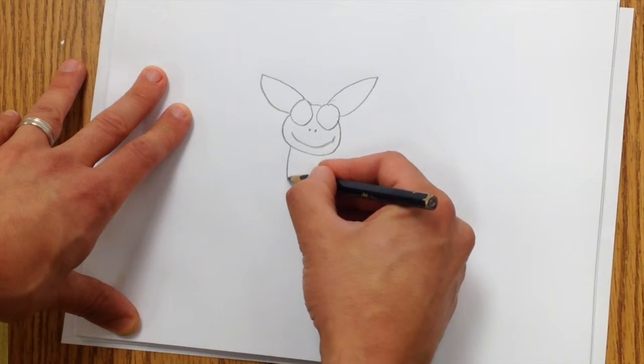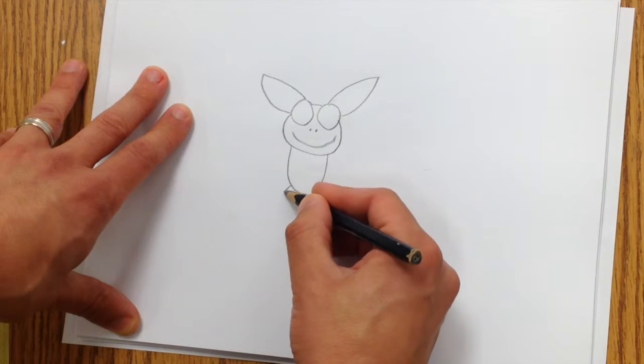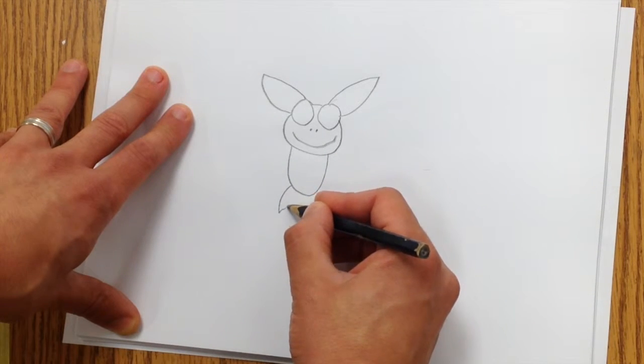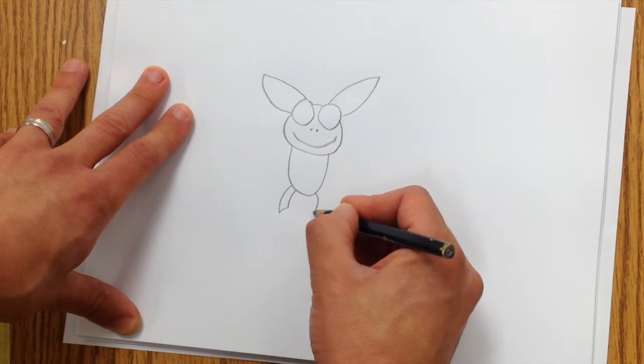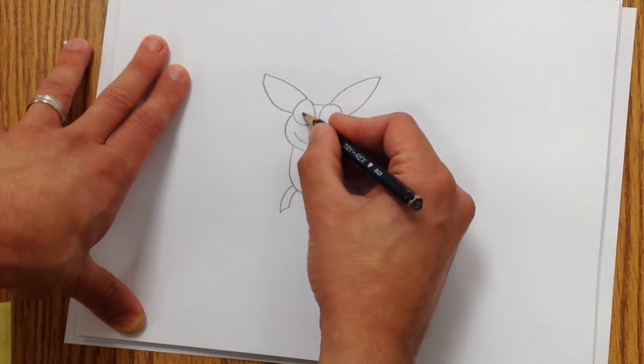I'm going to make a letter U for his body. I'm going to make his feet curve down like this. Let's give them some pupils.